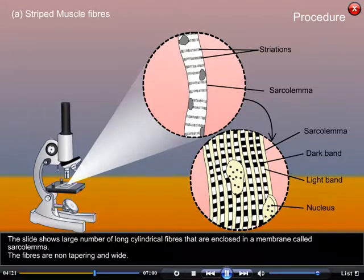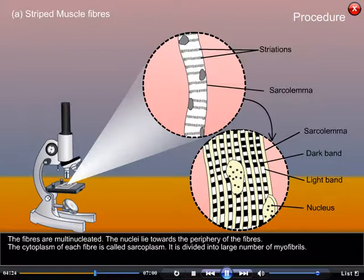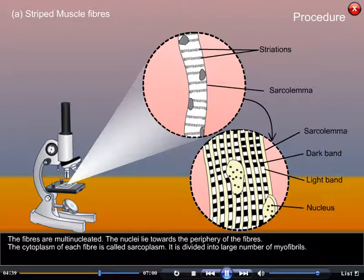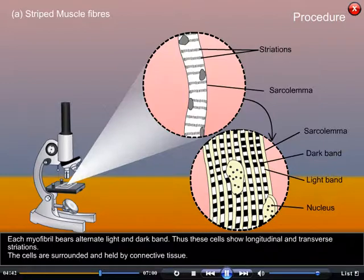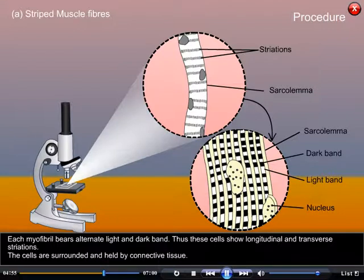The fibers are non-tapering and wide. The fibers are multi-nucleated and the nuclei lie towards the periphery. The cytoplasm of each fiber is called sarcoplasm, which is divided into a large number of myofibrils. Each myofibril bears alternate light and dark bands, and the cells show longitudinal and transverse striations. The cells are surrounded and held by connective tissue.